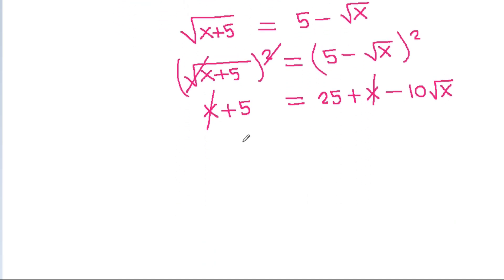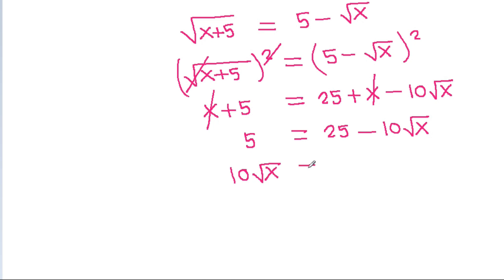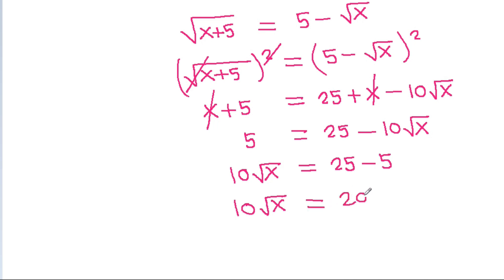So 5 equals 25 minus 10 times square root of x, and 10 times square root of x equals 25 minus 5, which is 20. So square root of x equals 20 divided by 10, that is 2. Therefore x equals 4.